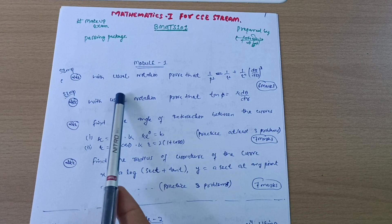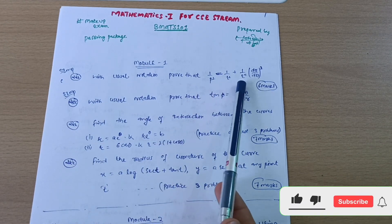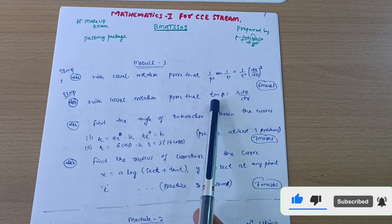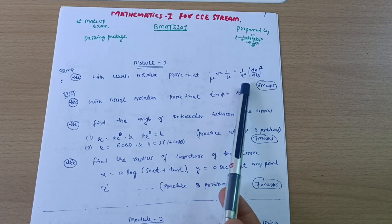Super important question is with usual notation prove that 1 by p square is equal to 1 by r square plus 1 by r power 4 dr by d theta whole square. And also with usual notation prove that tan of psi is equal to r d theta by dr. This is six marks question. We may ask you either this or this one, so you should practice for both.